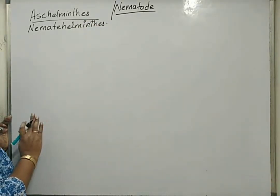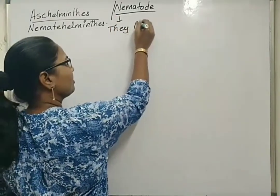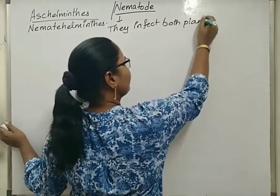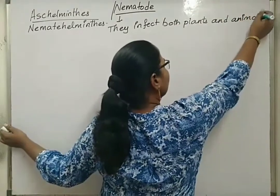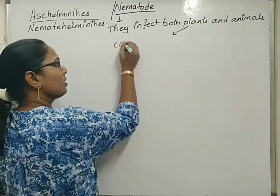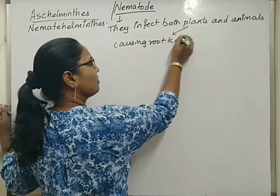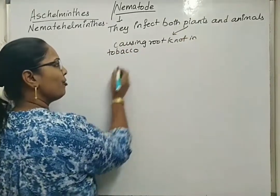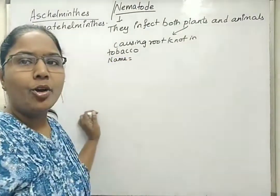These infect both plants and animals. The type of nematode that infects plants causes root knot in tobacco. The name of this nematode is Meloidogyne incognita.